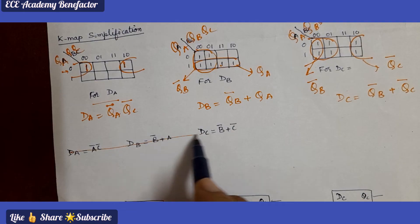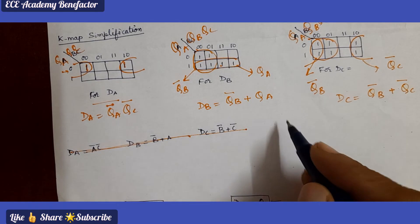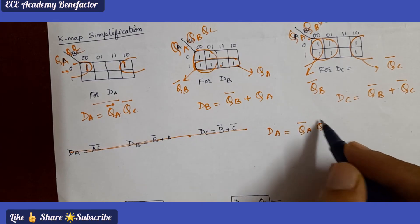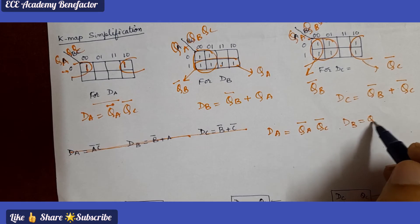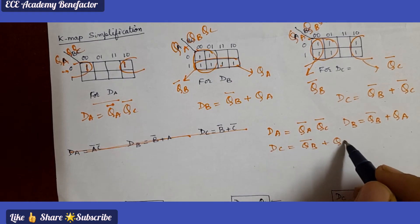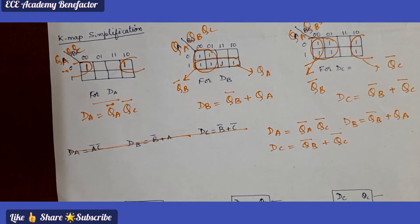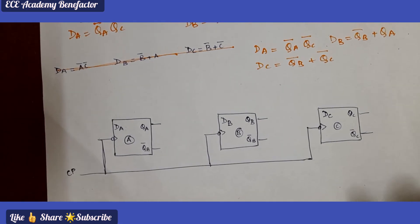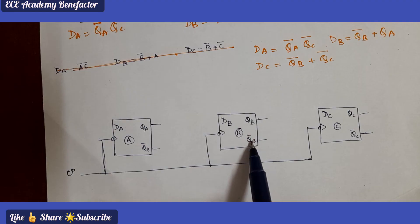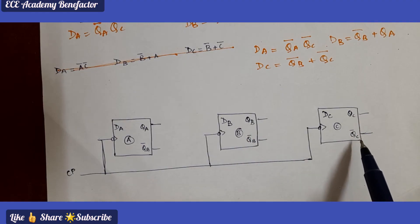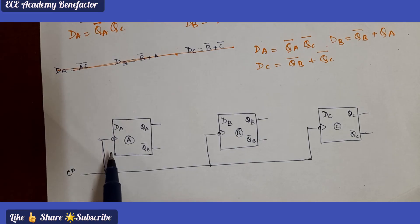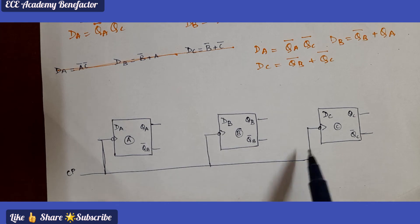We have obtained the expressions: DA = QA_bar · QC_bar, DB = QB_bar + QA, and DC = QB_bar + QC_bar. Now let us draw the logic diagram. We take three flip flops DA, DB, and DC. Their outputs are QA, QA_bar, QB, QB_bar, QC, QC_bar. Since we are designing a synchronous counter, the same clock pulse is given to all three flip flops. The bubble indicates it is negative edge triggered.